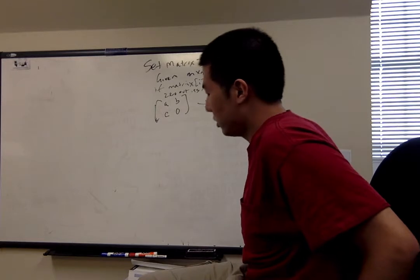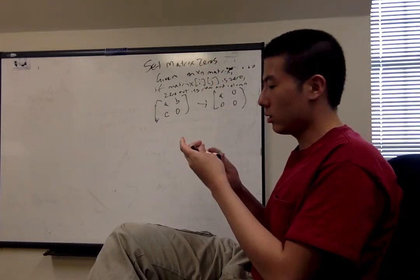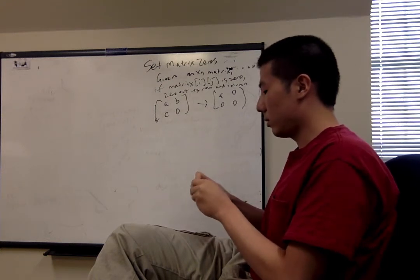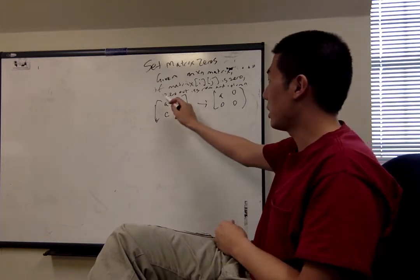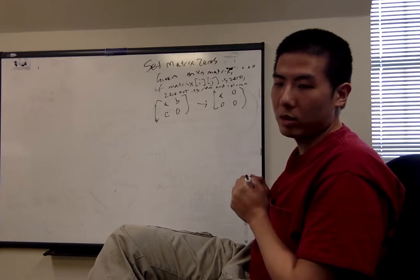Some constraints are that we want to do this in place and with O(1) space, so as efficiently as possible. So the trick to this problem, or at least the most efficient solution that's been discovered, is to use the first row and first column as placeholders for where to set the zeros.